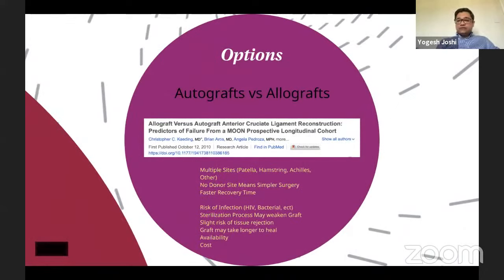Looking at the options for surgical management, we have two broad graft choices: allografts, which come from a cadaver, and autografts, which are our own tissues. There are advantages and disadvantages of both. A MOON trial — a multicentric cohort trial based in America — found that using allografts, especially in younger people, increases the failure rate of ACL reconstruction. My choice is to use autografts whenever possible. I only look for allograft reconstruction when autografts are exhausted, especially in multiple revisions or multiligamentous injuries.